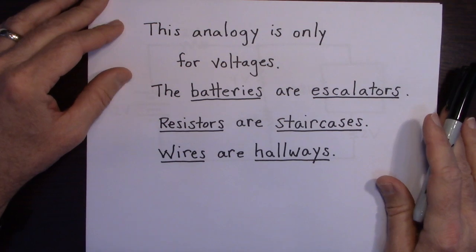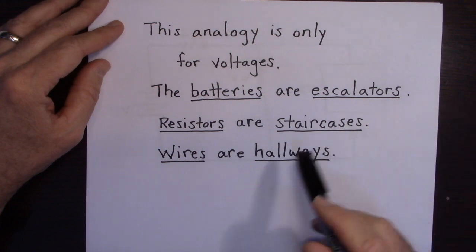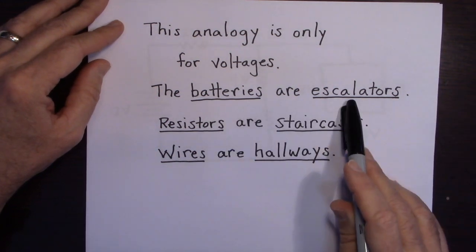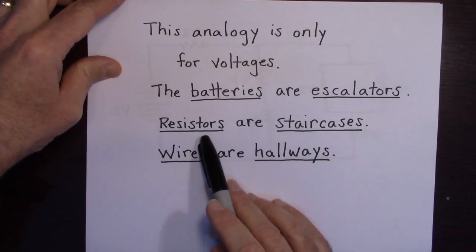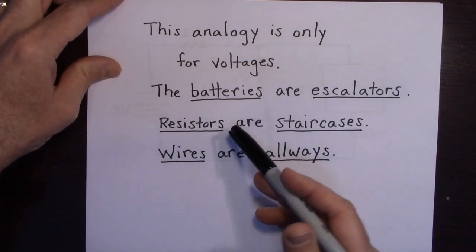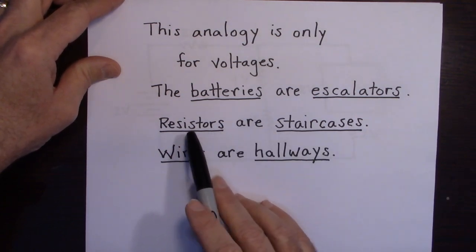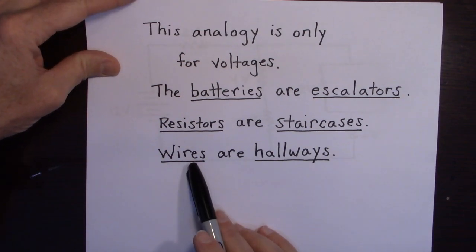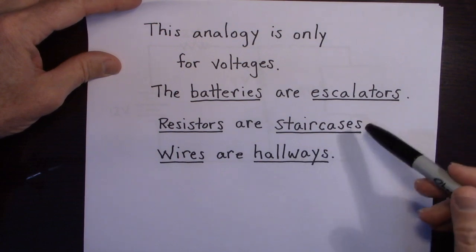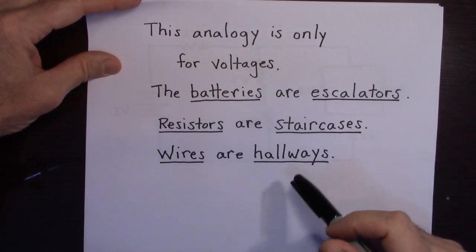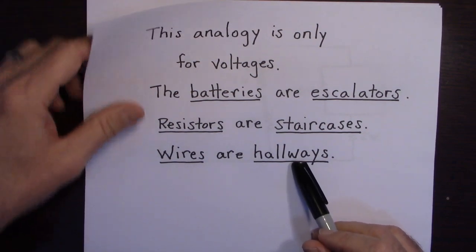This analogy is only used for voltages — it's not used at all for currents or anything else in the circuit. The battery is going to be an escalator. Resistors, and capacitors if you have them, are going to be the staircases. The wires in the circuit are like hallways in the mall — where the stores are, where you walk in from one of the hallways.